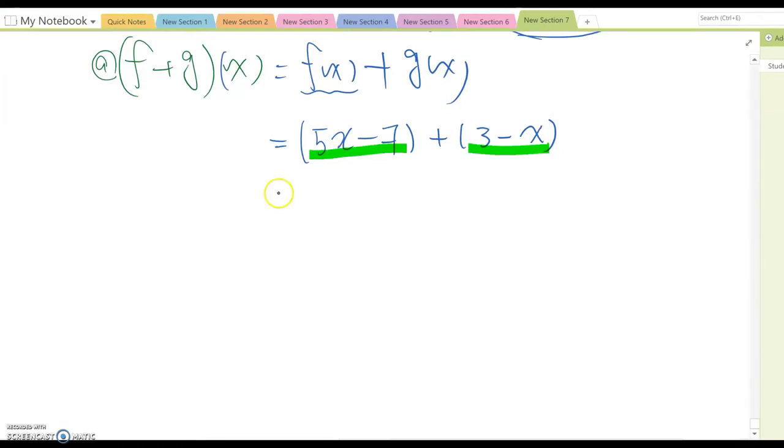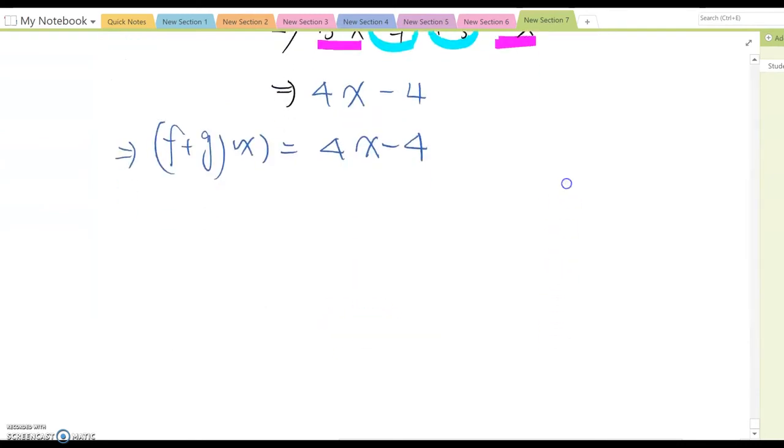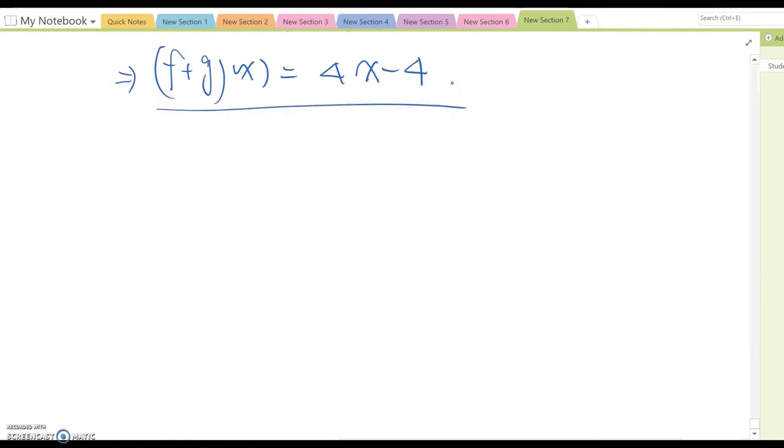Now open the parentheses, then it becomes 5x minus 7 plus 3 minus x. And then you combine like terms, so as you see 5x and minus x are like terms so they become 4x, and minus 7 plus 3, so it becomes minus 4. Therefore we got (f+g)(x) equal to 4x minus 4. So what kind of function form is it? This is the linear equation. Therefore domain becomes x or all real numbers.